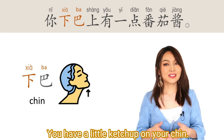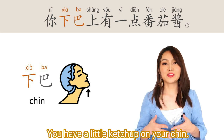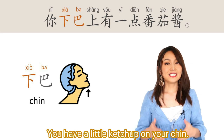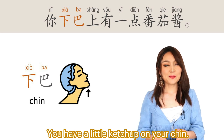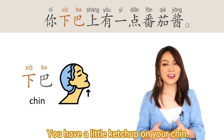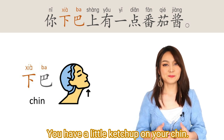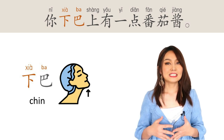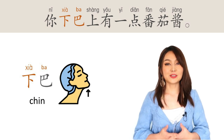下巴 — it means chin. 下巴. For example: 你下巴上有一点番茄酱. You have a little ketchup on your chin. 你下巴上有一点番茄酱.